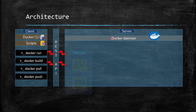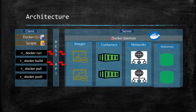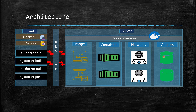Apart from running the Docker daemon, the server also handles image management, containers, networks, and volumes. Network means the container uses the network connection from the host operating system. Volume means if you want to add storage to a container, that's handled here. All these things are managed by the server.